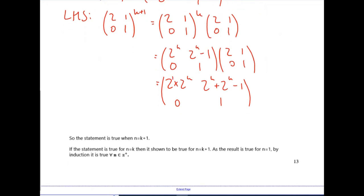2 times 2 to the k, well that's 2 to 1 times 2 to the k, and if you add those powers you get 2 to the k plus 1. Similarly for this one, so we've got two lots of 2 to the k, so that's the same as 2 times 2 to the k which we've just done.